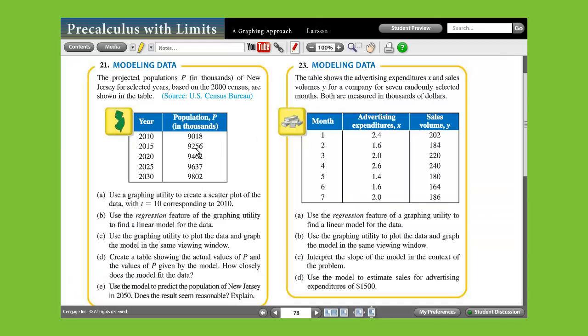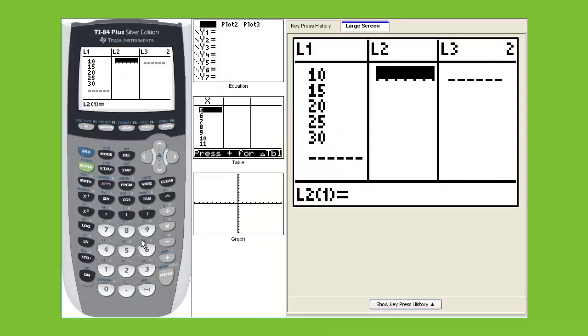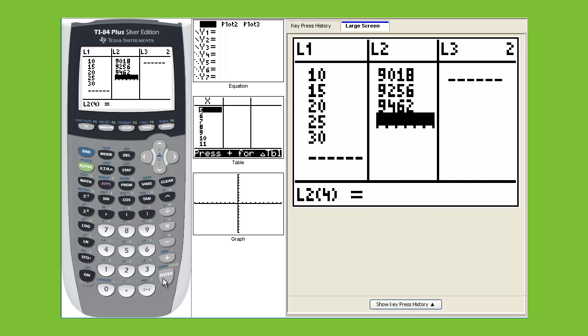It's going to be this column here. This is your Ys. We're going to say 9018, enter. Then you have 9256. Then we get 9462, enter. 9637. And finally, 9802.